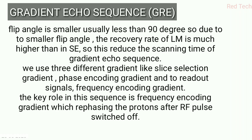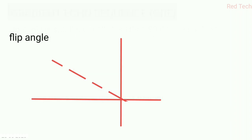Using a smaller flip angle increases the recovery rate of longitudinal magnetization, which reduces the scan time compared to Spin Echo — this is the main advantage of the GRE sequence. We use three gradients: slice selection, phase encoding, and frequency encoding. As you can see in the diagram, the smaller flip angle allows hydrogen protons to recover their state very quickly. That covers the Gradient Echo sequence.